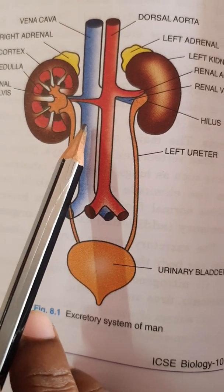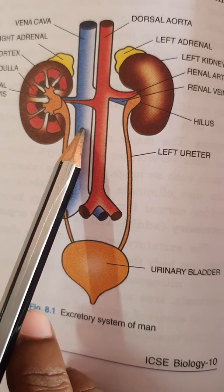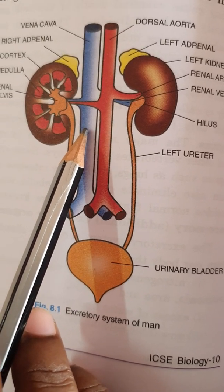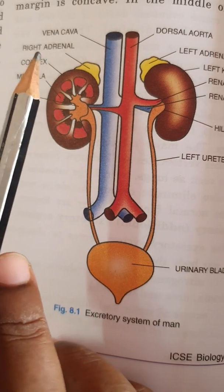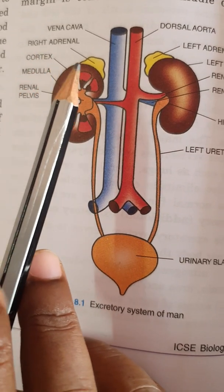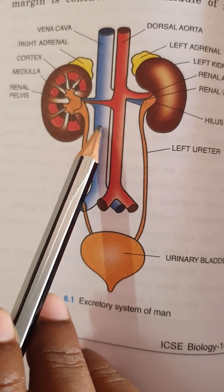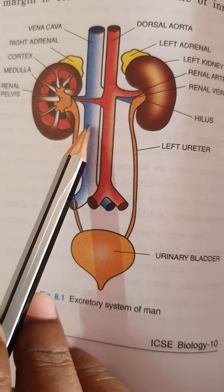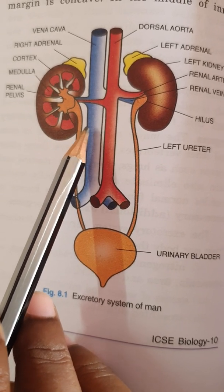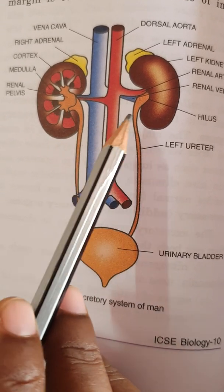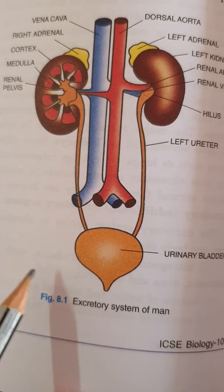Afterwards, a pair of renal veins from the kidneys opens into the inferior vena cava, which carries this blood to the heart. In the heart, this deoxygenated blood is then sent to the lungs to be oxygenated. This completes the excretory system.